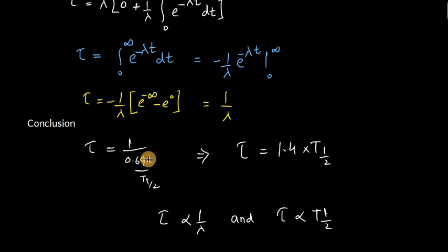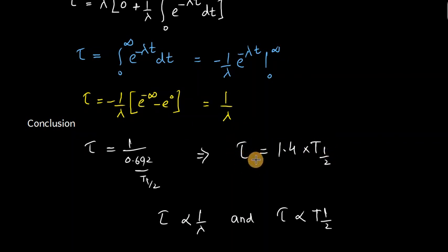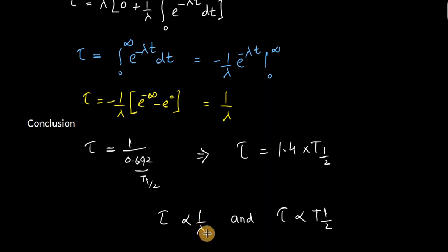So tau equals 1/λ. Since λ equals 0.693 divided by t-half, this expression shows that mean life is directly proportional to half life — the greater the half life of a nucleus, the greater its mean life. Also, since t-half equals 0.693/λ, we see that mean life is inversely proportional to the disintegration constant: the greater the disintegration constant of a nucleus, the smaller its mean life, and vice versa.